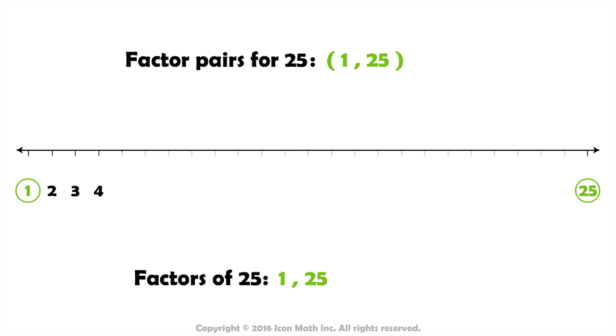But if you consider the next number, number 5, you will find that 5 times 5 equals 25. Which means that 5 and 5 is the second factor pair for the number 25.